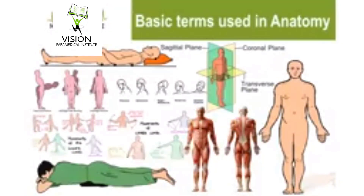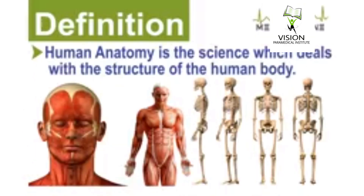Basic Concepts of Human Anatomy Part 1. In this video you are going to see some basic terms used in human anatomy. Before knowing the actual subject, everyone must know some basic concepts. Human anatomy is the science which deals with the structure of the human body. The actual formation of the human body is studied under this subject. Anatomy forms a firm foundation of the whole art of medicine and introduces the student to a greater part of medical terminology.